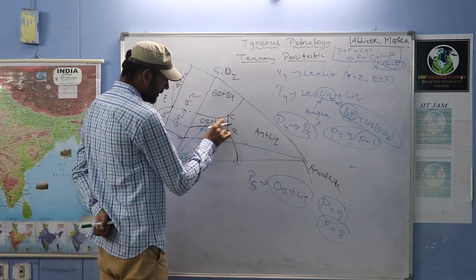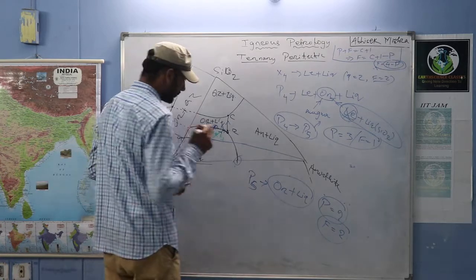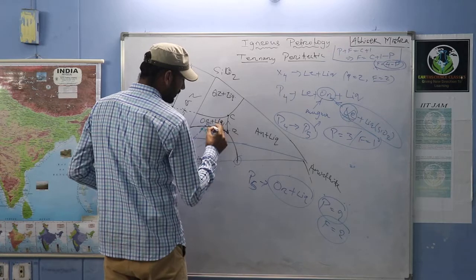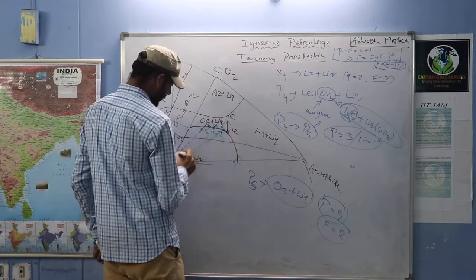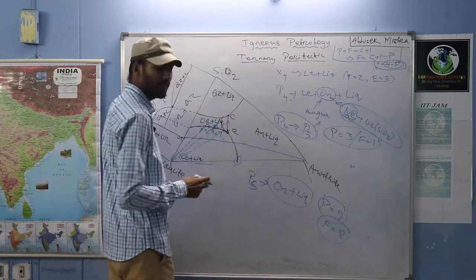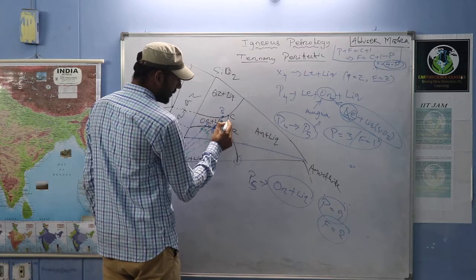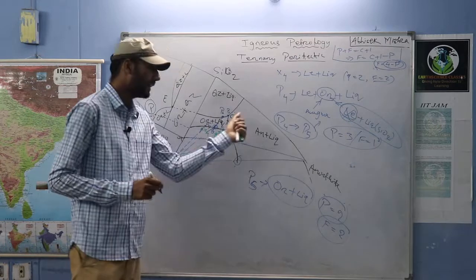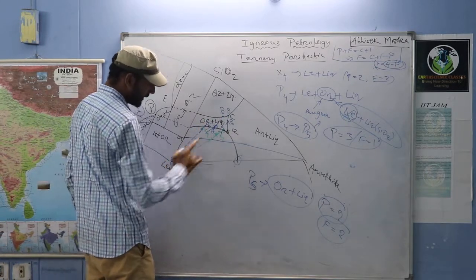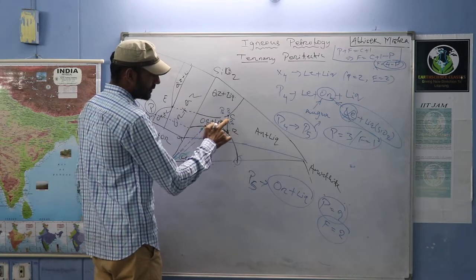For a composition in the anorthite field: anorthite plus liquid. Joining the two points, the magma moves to the common boundary between leucite and anorthite, giving anorthite plus leucite plus liquid. Then it moves toward reaction point R. At R: leucite plus anorthite plus orthoclase plus liquid. Leucite is converting to orthoclase, orthoclase forms directly from magma, and anorthite also forms.